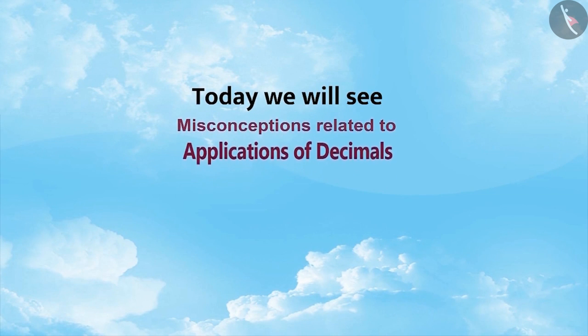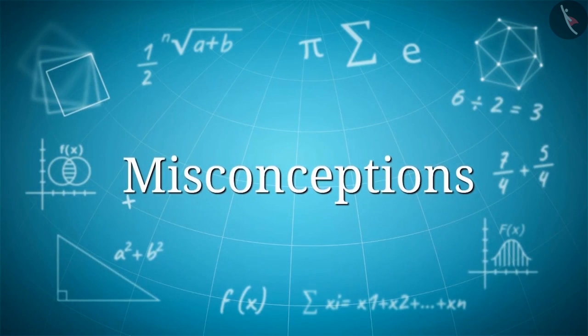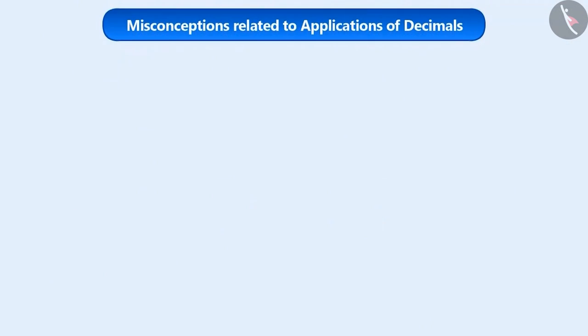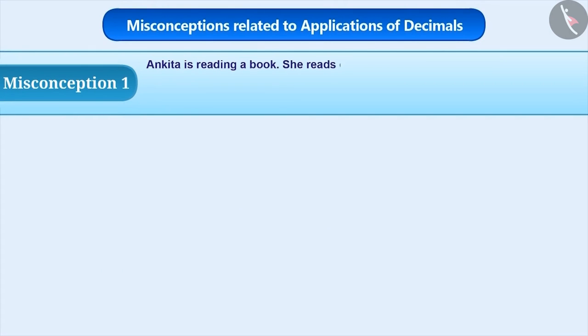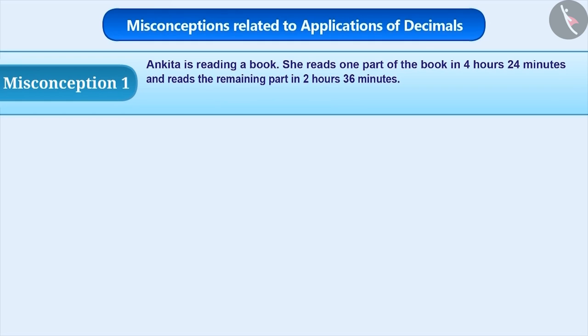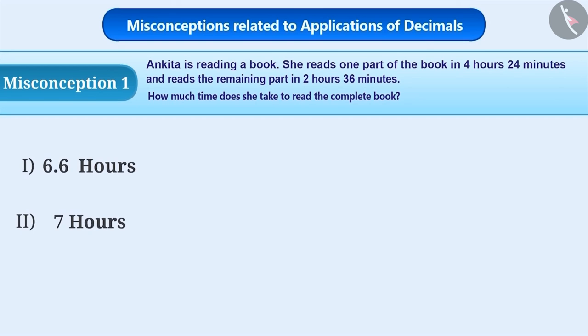Today, we will look at misconceptions related to application of decimals. Misconception 1: Ankita is reading a book. She reads one part of the book in 4 hours and 24 minutes and reads the remaining part in 2 hours and 36 minutes. How much time did she take to read the complete book?